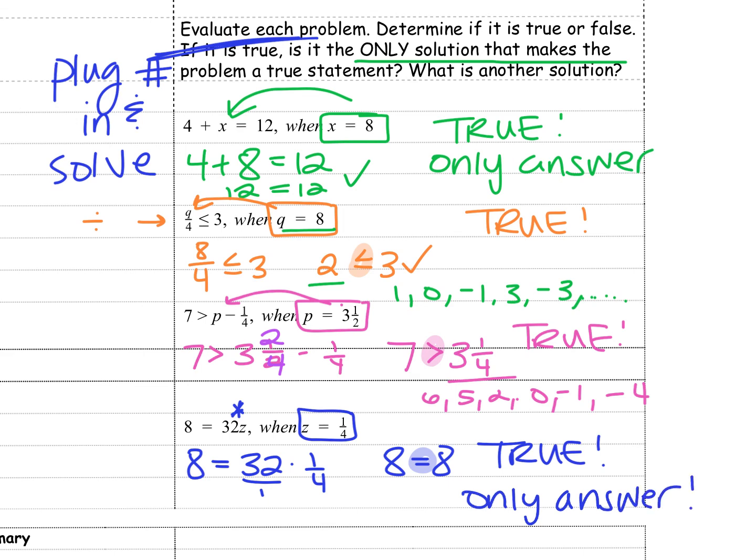So when it's an inequality, we can have multiple answers. But when we have equations or equal signs, we only get one answer.